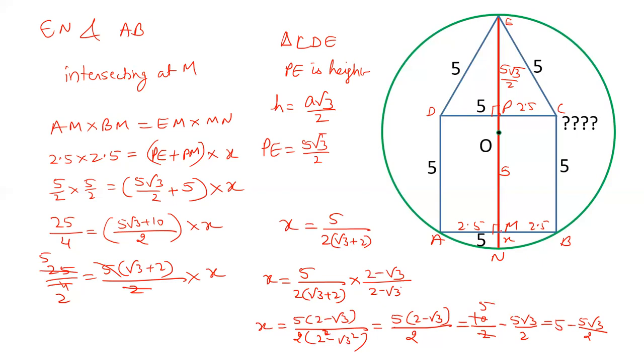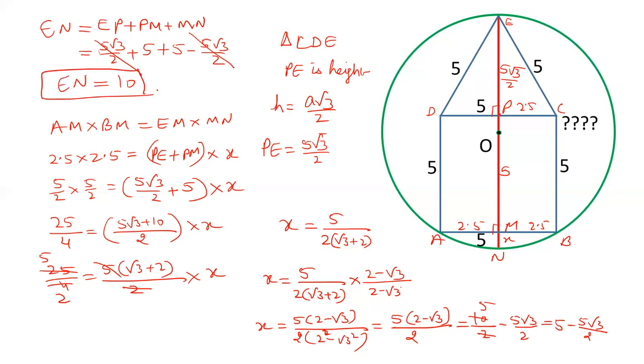EN is a diameter. So let's calculate the length of EN. The length of EN will be equal to EP plus PM plus MN. PE is 5√3/2, PM is 5, and MN is X which is 5 minus 5√3/2. This will be cancelled out. 5 plus 5 is 10. And EN is diameter. So diameter is 10 centimeter. Radius will be half of this which will be 5 centimeter. So the value of radius of the circle will be 10/2 that is 5 centimeter.